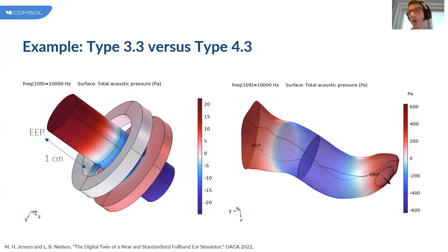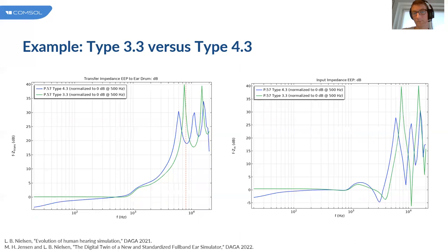It has a more anatomically correct geometry also. The colors in this plot are the pressure response at 10 kilohertz. Comparing the Type 3.3 and 4.3 simulators, Type 4.3 blue curve, Type 3.3 green curve. On the left we look at the transfer impedance and at the right we look at the input impedance of the system. At the higher frequencies above six, seven, eight kilohertz, there's a big discrepancy between the two systems. This is the other reason for developing the new full band Type 4.3 ear simulator to actually get a more correct high frequency response of the ear simulator.